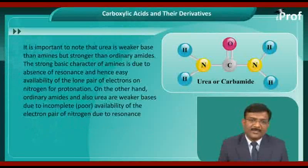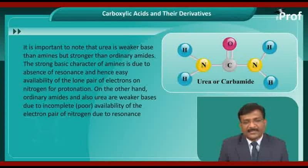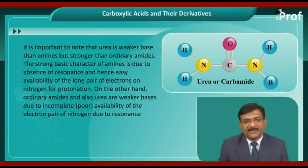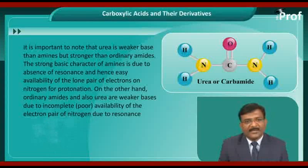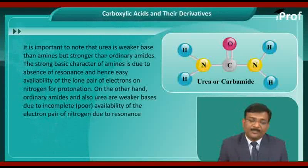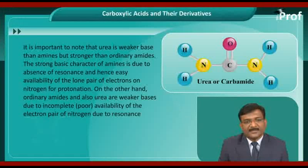It is important to note that Urea is a weaker base than amines but stronger than ordinary amides. The stronger basic character of amines is due to the absence of resonance and hence easy availability of a lone pair of electrons on nitrogen for protonation. On the other hand, amides and also Urea are weaker bases due to incomplete or poor availability of the electron pair on nitrogen due to resonance.